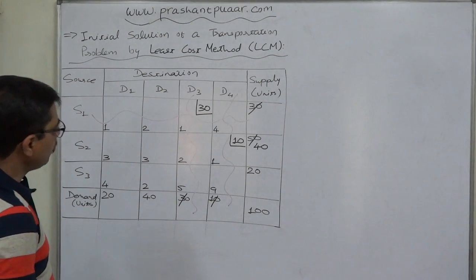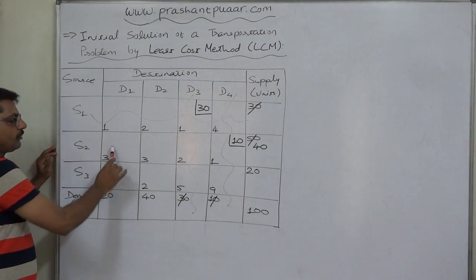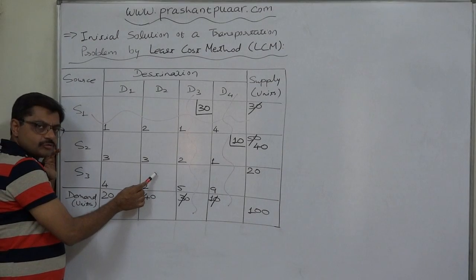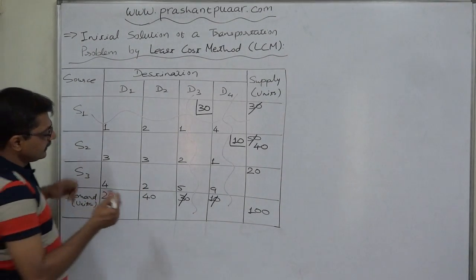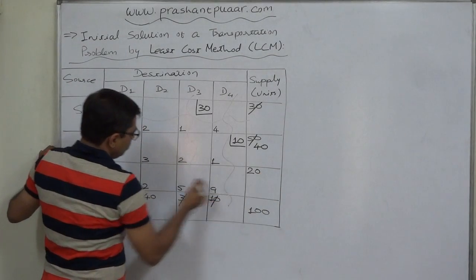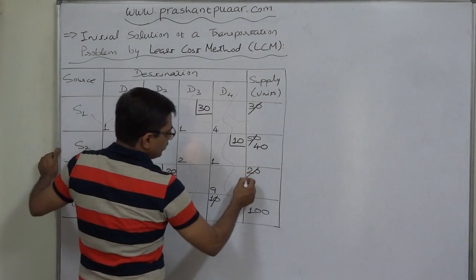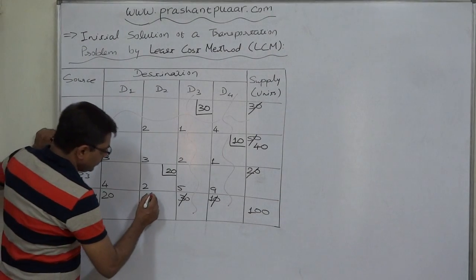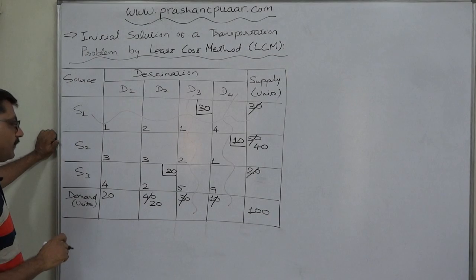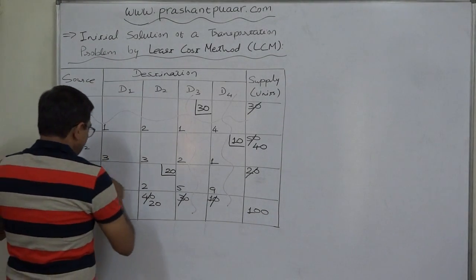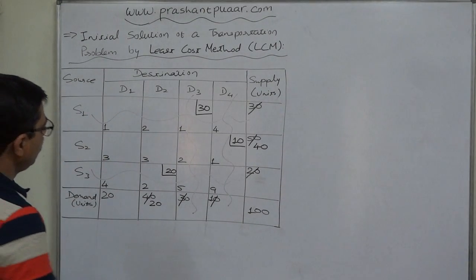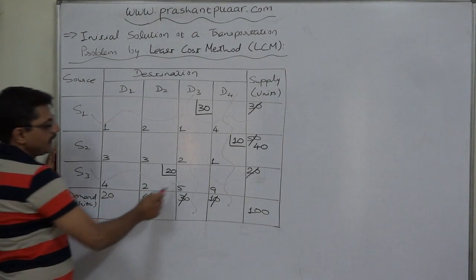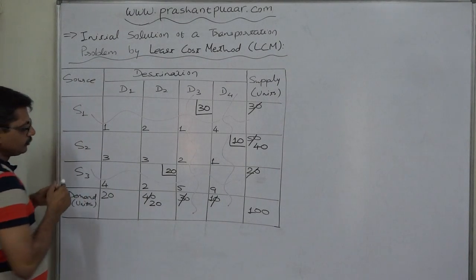With the remaining four open cells, the lowest cost is 2. We allocate to that cell: demand 40 units, supply 20 units — whichever is lower is 20 — so supply of S3 is exhausted but demand of D2 is only partially satisfied (20 units still unsatisfied). We cancel the S3 row. There is now a tie between the two remaining cells, and in both cells the same quantity of 20 can be allocated.